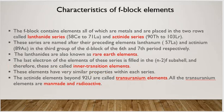Now, characteristics of F block elements. F block contains all the elements which are metal and placed in the two rows called lanthanoid series from cerium to lutetium and actinoid from thorium to lawrencium. These series are named after their preceding element lanthanum for lanthanoid and actinium for actinoid series in the third group of D block i.e. 6 and 7 period respectively. The lanthanoids are also called as rare earth metals. The last electron of the element of these series is filled in N-2 F sub shell. Therefore, these are called inner transition elements.